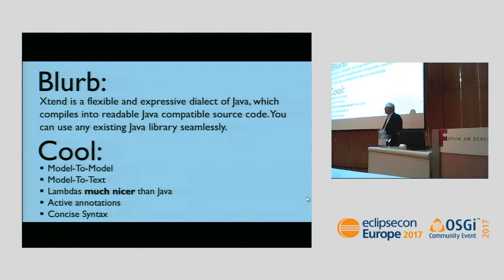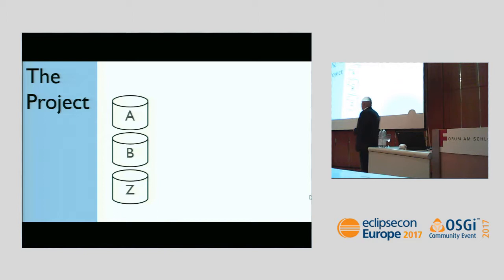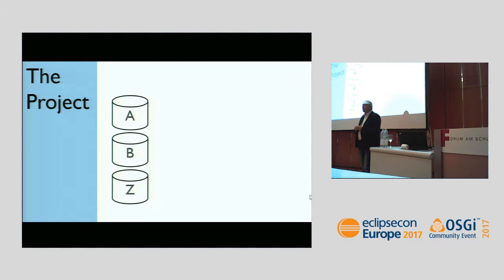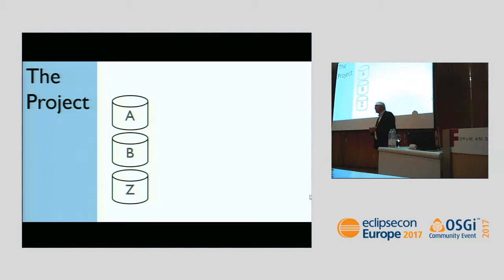We've been using Xtend in a large project in the automotive industry. I cannot name the company, but it's a big automotive OEM. The data for the software in the car is distributed over a number of databases — for example, an Oracle database storing messages transferred within the car, a binary file containing diagnostic information, and a UML or SysML model containing software architecture information.